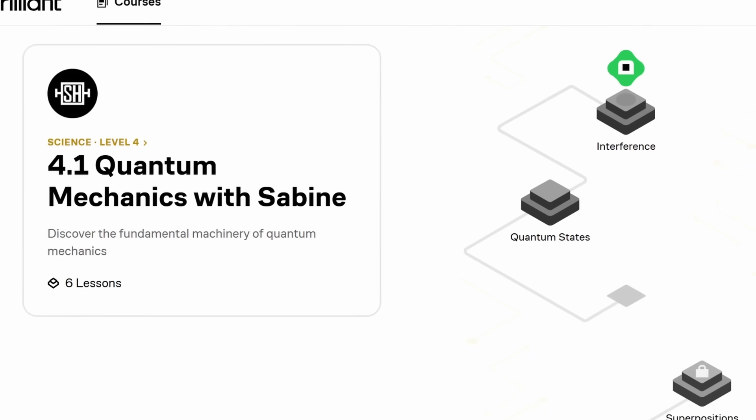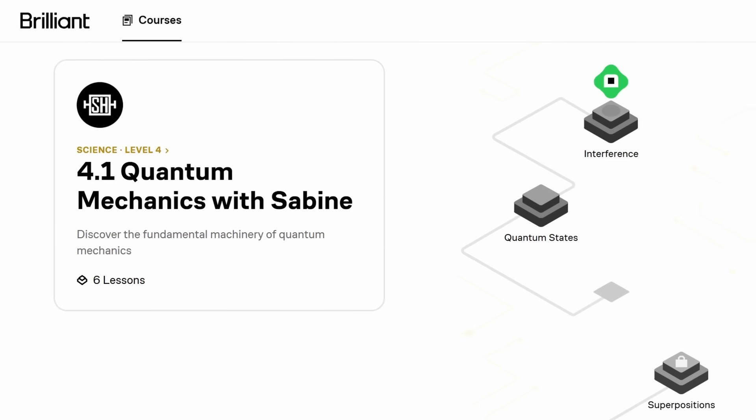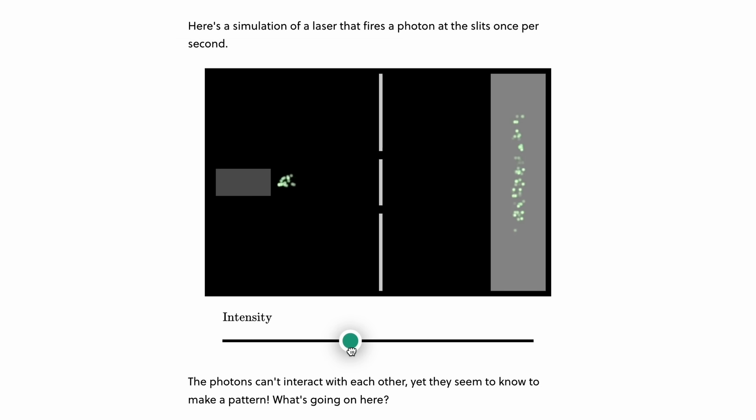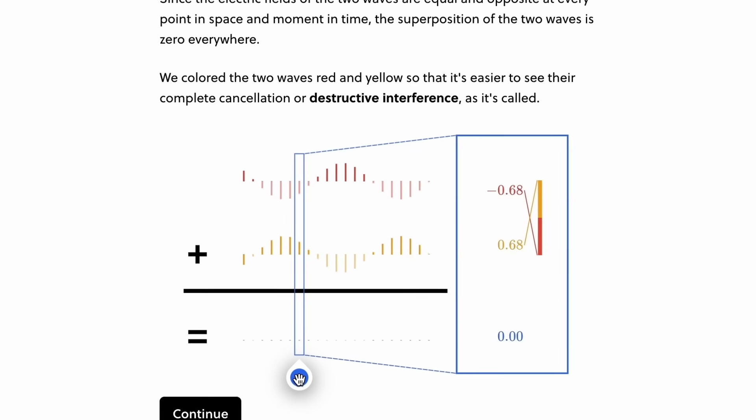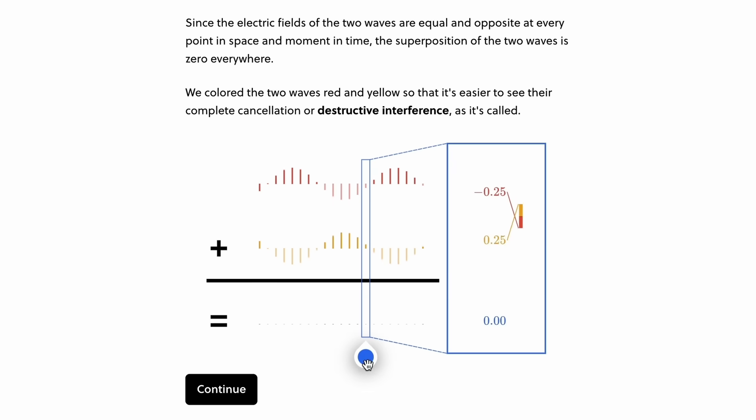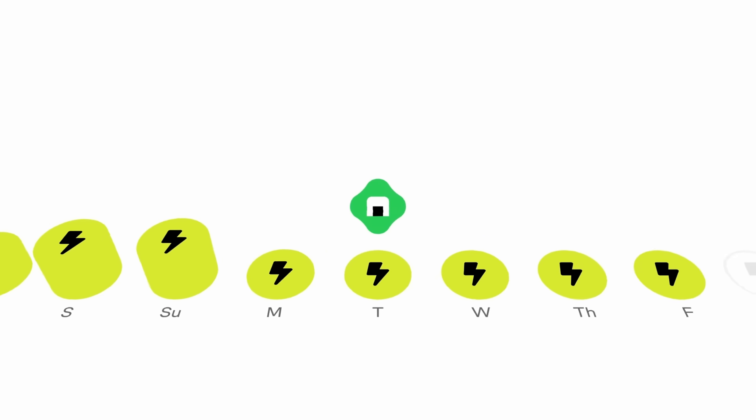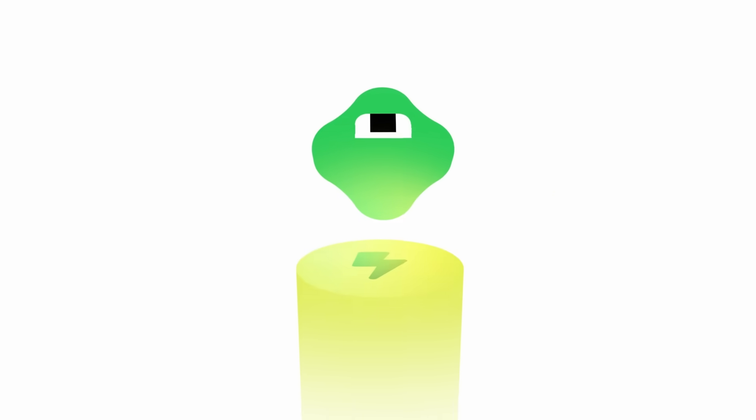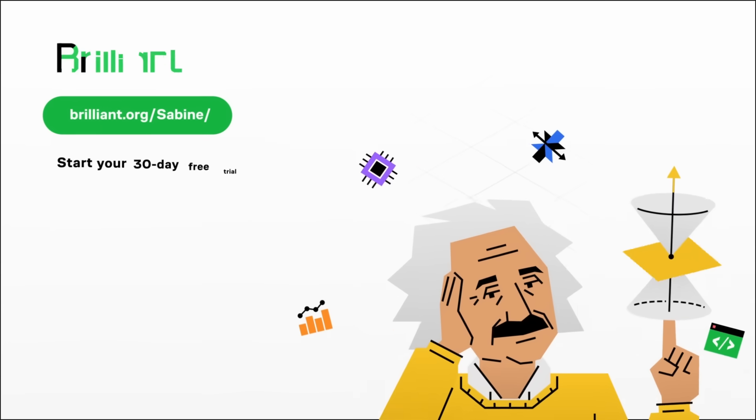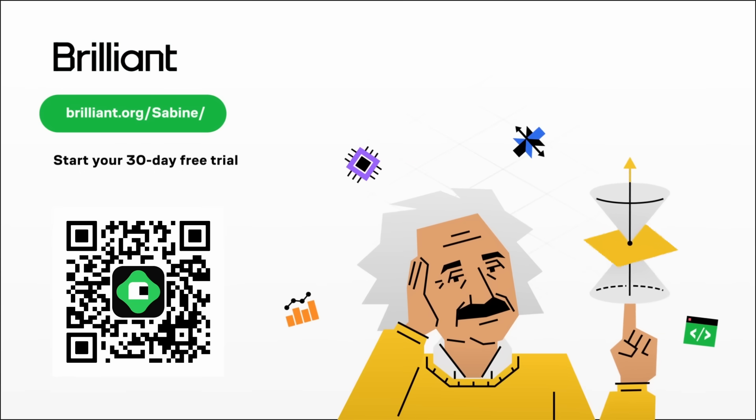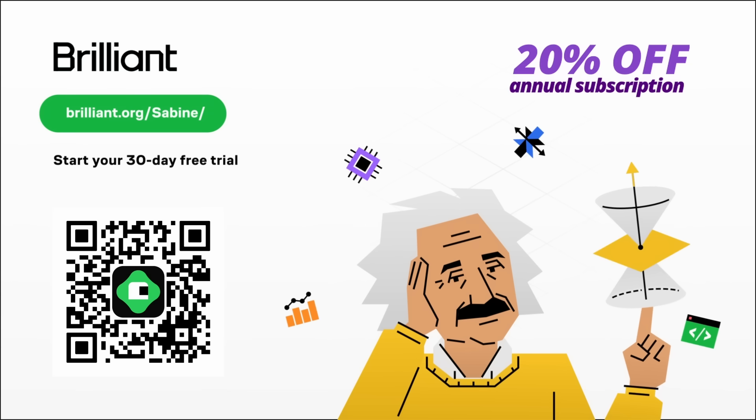I even have my own course on Brilliant, that's an introduction to quantum mechanics. It'll help you understand what a wave function is and what the difference is between superpositions and entanglement. It also covers interference, the uncertainty principle and Bell's theorem. And after that, you can continue maybe with their course on quantum computing or differential equations. And of course, I have a special offer for viewers of this channel. If you use my link brilliant.org/sabina or scan the QR code, you'll get to try out everything Brilliant has to offer for a full 30 days. And you'll get 20% off the annual premium subscription. So go and check this out.